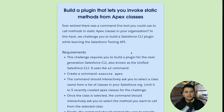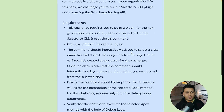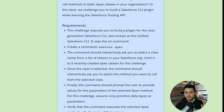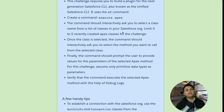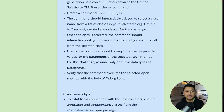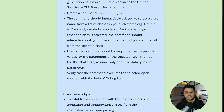For this hack, we'll be building a plugin that lets you invoke static methods from Apex classes. Our first challenge requires us to build a plugin for the next generation of the Salesforce CLI — the unified Salesforce CLI. The plugin should create a command called 'execute apex'. Upon entering this command, it should interactively ask you to select a class name from a list of classes in your Salesforce org, limited to five recently created Apex classes.